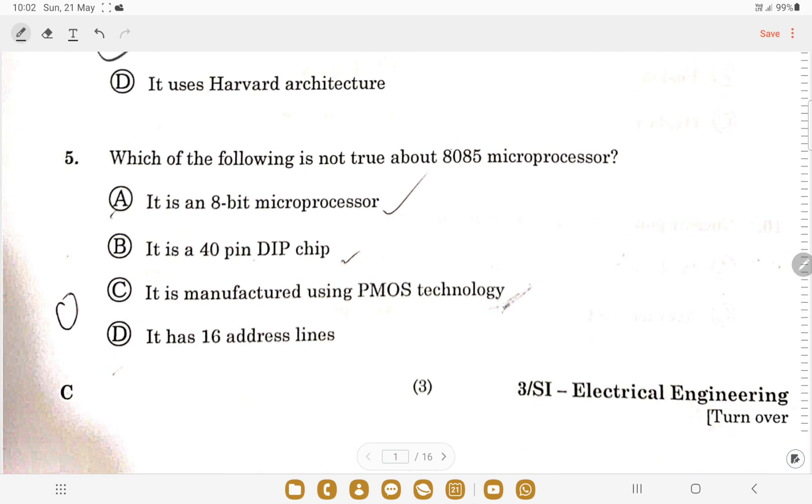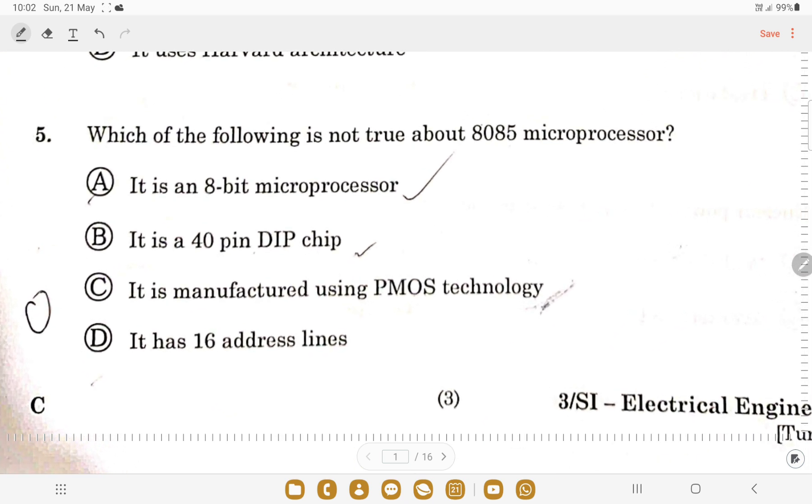Next question: which of the following is not true about 8085 microprocessor? It is an 8-bit microprocessor - yes. It is a 40 pin DIP - yes. It is manufactured using PMOS technology - no, it is manufactured using NMOS technology. PMOS is used in 4004 microprocessor. It has 16 address lines - yes. So option C is the correct one.